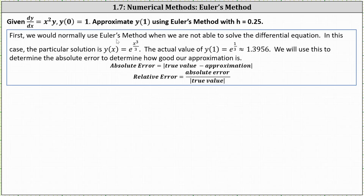We would normally use Euler's method when we are not able to solve the differential equation. In this case, the particular solution is y of x equals e to the power of x cubed divided by 3. The actual value of y of 1 is e to the power of 1/3, or approximately 1.3956. We will use this to determine the absolute error as well as the relative error, to determine how good our approximation is.